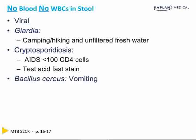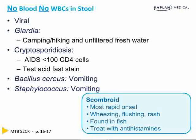Bacillus cereus is associated with vomiting, never has blood, and never has fever. Staphylococcus is the same — these preformed toxins cause a mild, self-limited vomiting and diarrhea. Scombroid is a histamine fish poisoning with rapid onset, associated with wheezing, flushing, and rash. It's found in fish, treated with antihistamines, and can occur 10 to 20 minutes after eating.